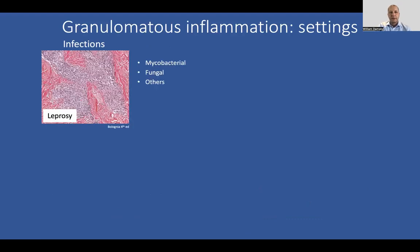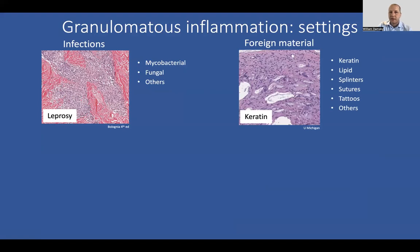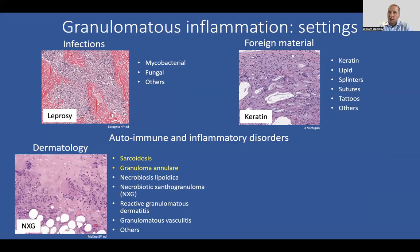Where do we see granulomatous inflammation? Probably the most common setting is infection — this is probably why these immunologic programs exist. On the upper left here, we see an example of leprosy. We can also see granulomas with other infections like mycobacterial infections, fungal infections, and other settings. As a dermatopathologist, we commonly see granulomatous inflammation in the setting of foreign body reactions. Keratin is a common one, like a ruptured cyst — this is kind of the cleanup crew that comes in to get rid of foreign material.